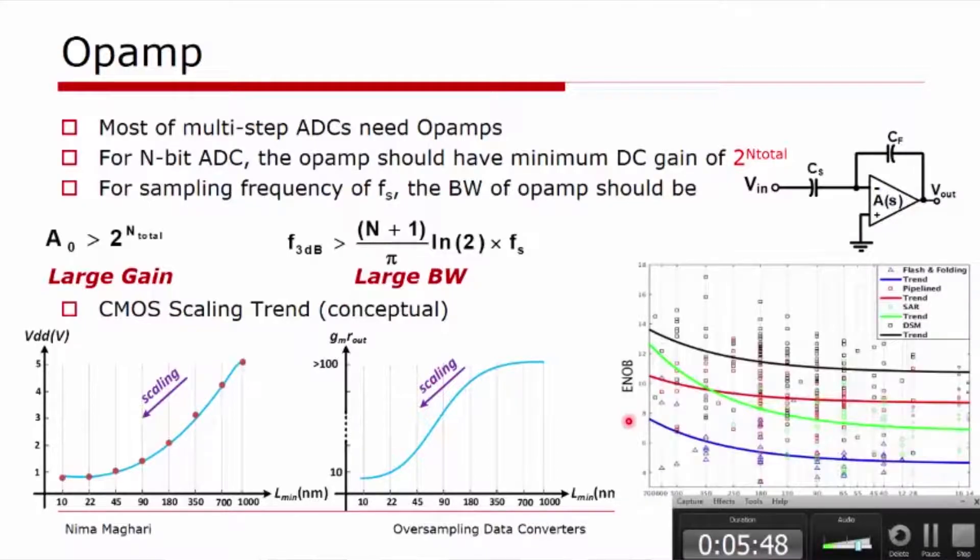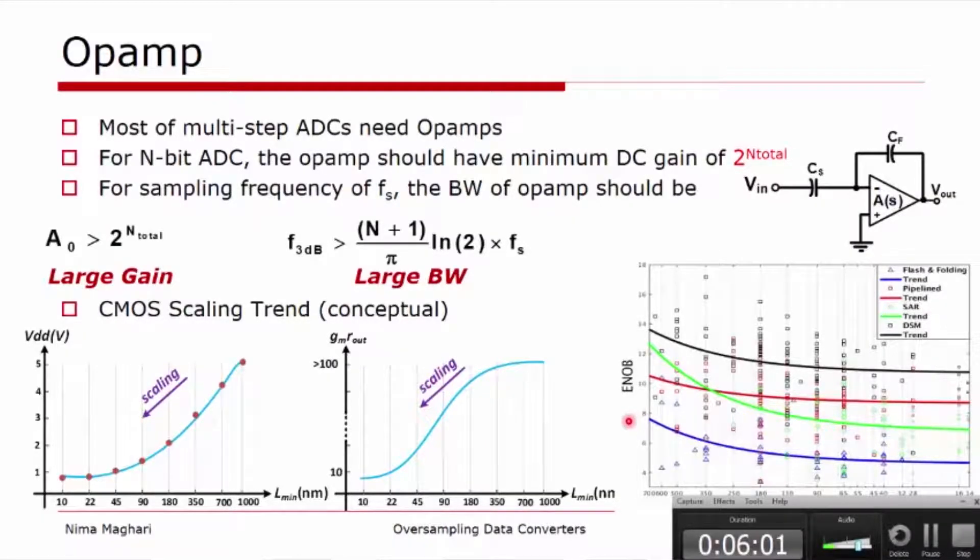This plot shows the actual data from the ISSCC and VLSI in the past 10 years on different architecture types and shows the trend line between the performance and the technology node. As you can see, the Delta Sigma ADCs still is the predominant structure for the higher resolution type ADCs.